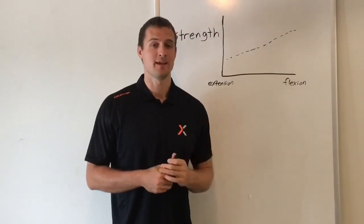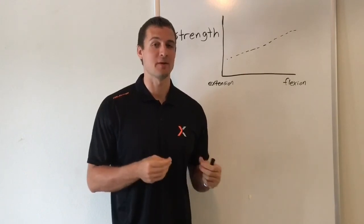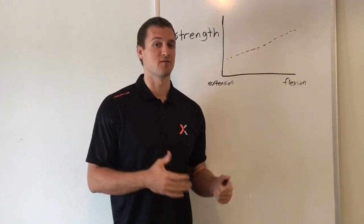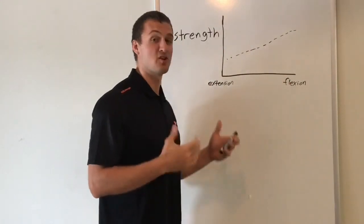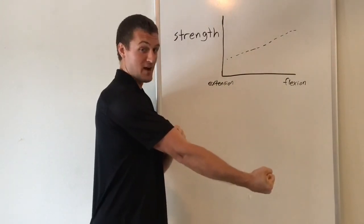However, what we can't do is assume that bands and chains are always accommodating resistance. Because what if the strength curve doesn't line up with the resistance? So I flip this around now from extension to flexion. Let's talk about a bicep curl. At the bottom, you're in extension, and then you're going to move into flexion.